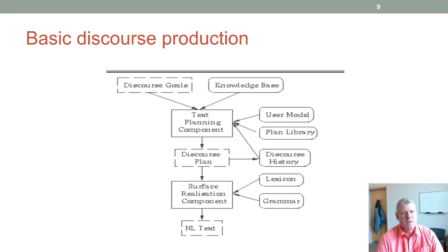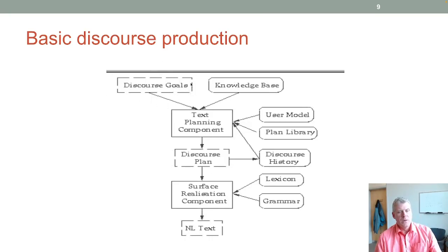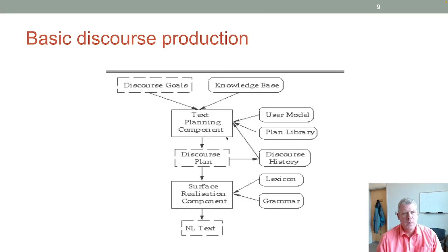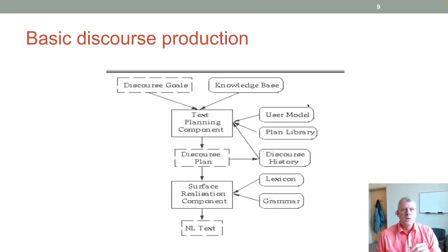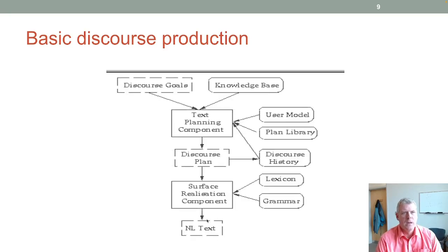Here's a high-level diagram of basic discourse production. You have some goal — like 'I need to make a reservation' — and a knowledge base that feeds into a text planning component. That's influenced by a user model that simulates a human interacting with the system. You have a discourse plan, and discourse history can influence what's said next. It all comes down to natural language text that can be put into a TTS system and spoken.